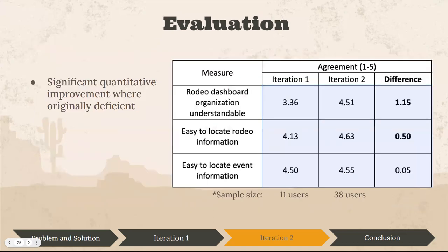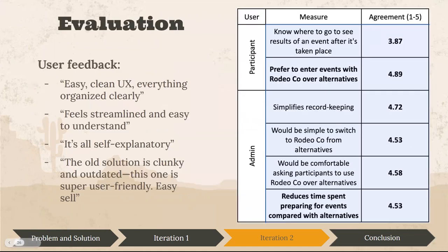Where we were originally deficient in iteration one, we found significant improvement. Anything that was neutral or hard to figure out, we got up to being easy to figure out — so that's great. Our qualitative feedback was much more positive: everything organized clearly, self-explanatory. Whereas before there were many call-outs of small and big issues with the product. And here are measures of agreement comparing with the alternatives — we also have some more information on that.